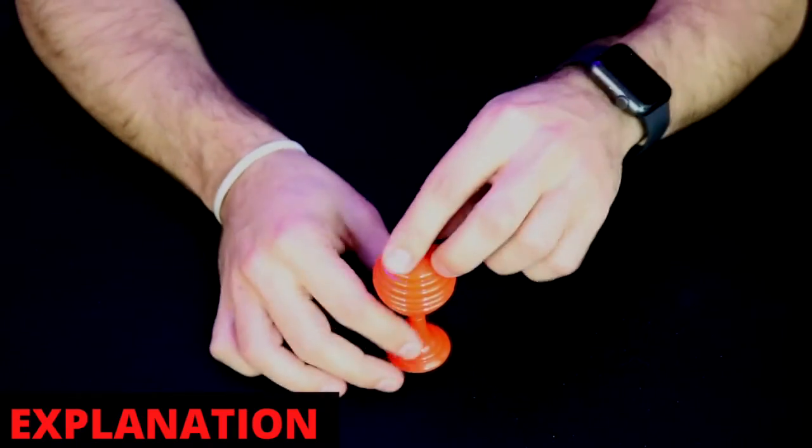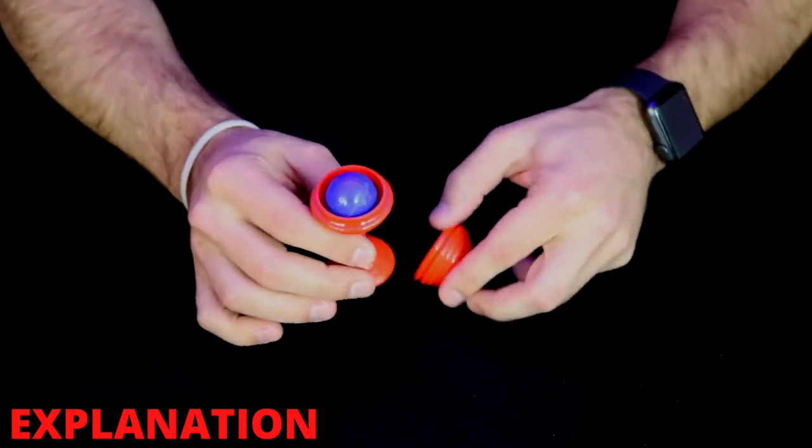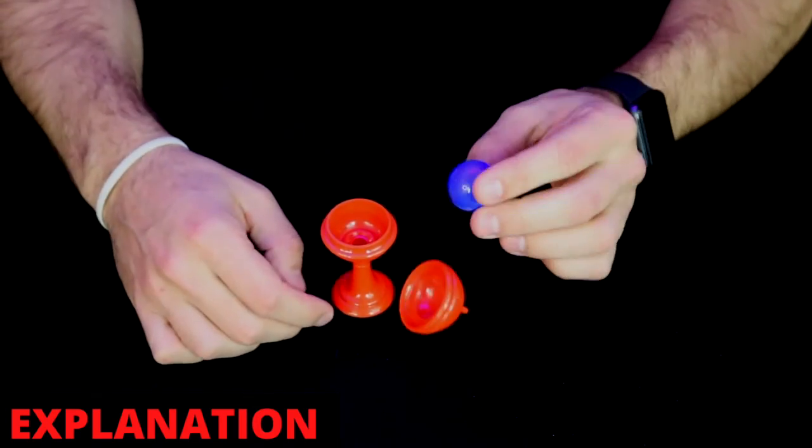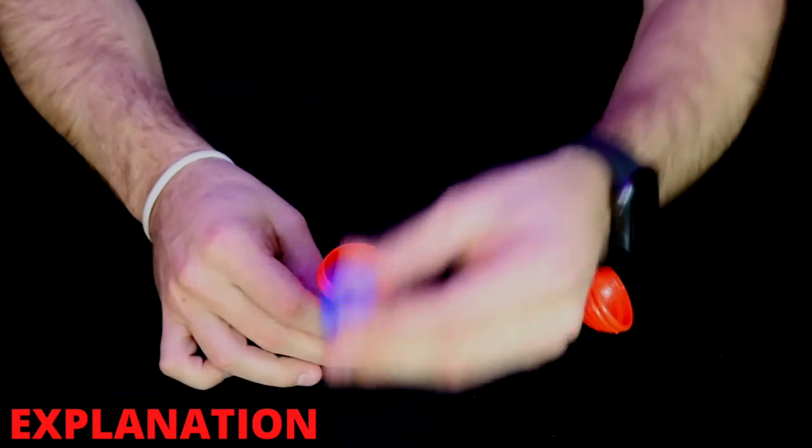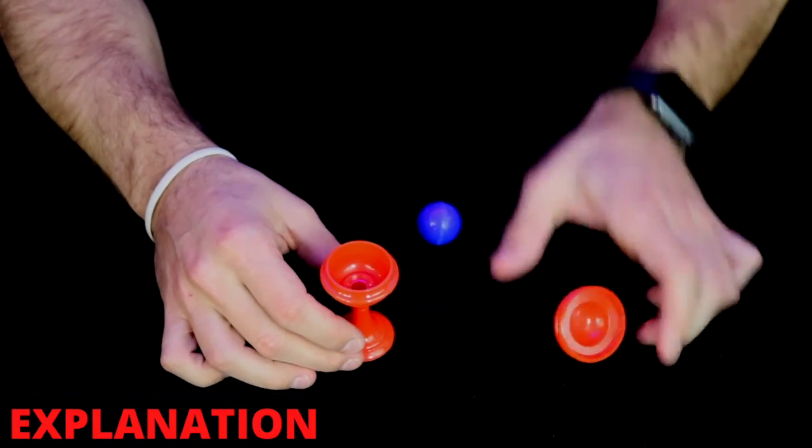So how does this work? Well, here is the secret. Like I said, you can perform this right out of the box. It comes with a red vase just like this and a blue ball. The secret is...